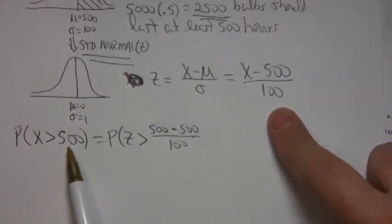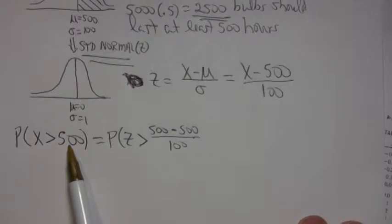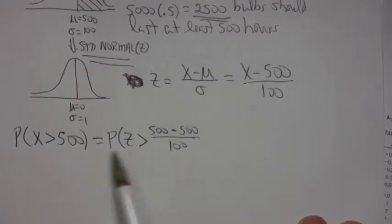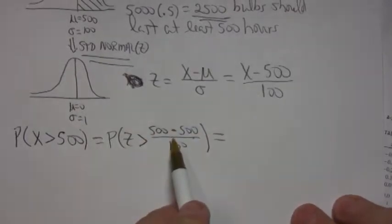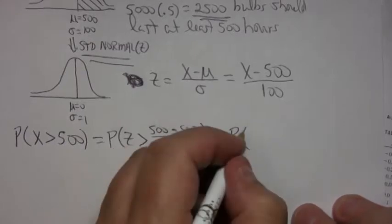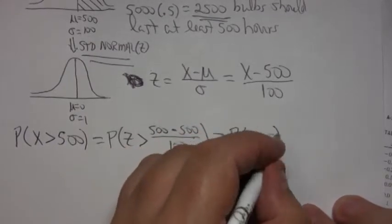In other words, to convert that to a number you look up in the table, you subtract the mean, which happens to be 500, and divide by the standard deviation, which is 100. Now, 500 minus 500 is 0, and 0 divided by 100 is 0, so that just turns out to be the probability that z is greater than 0.